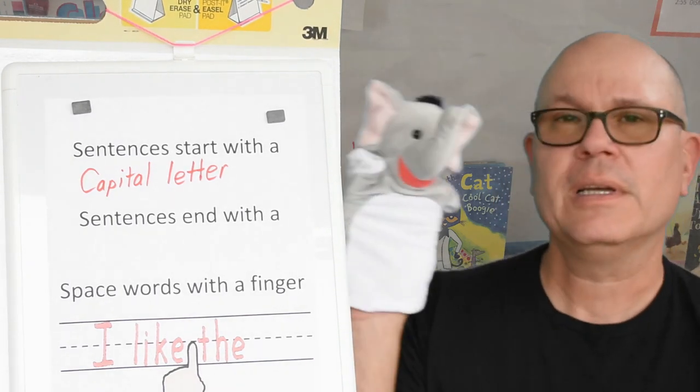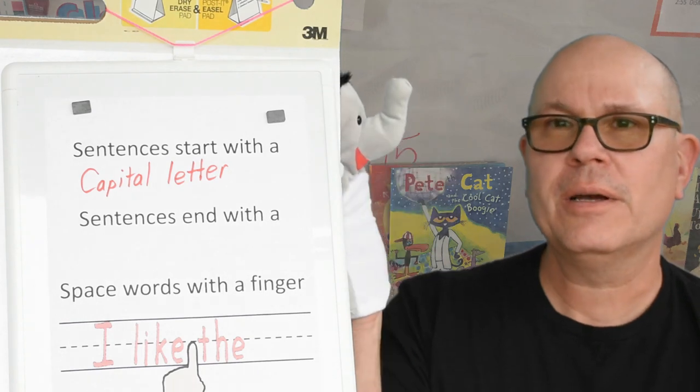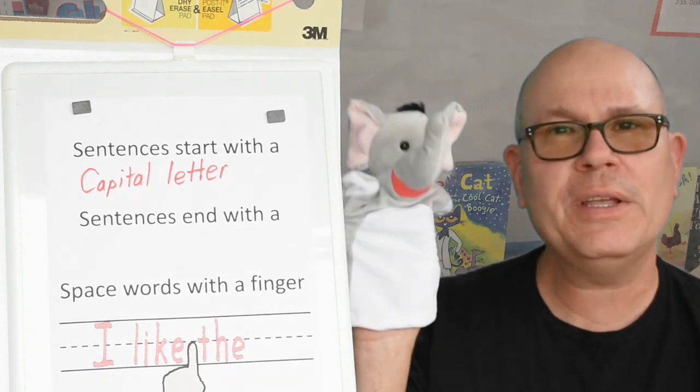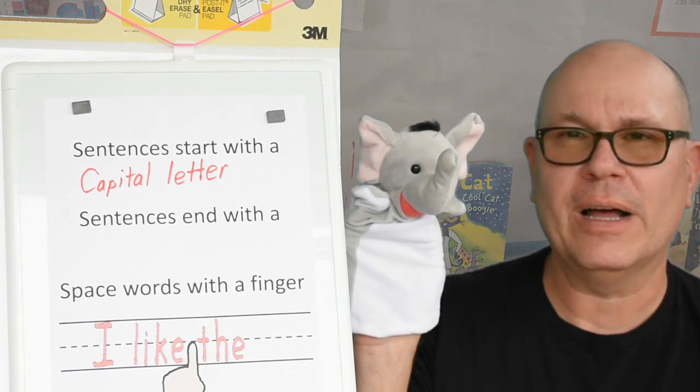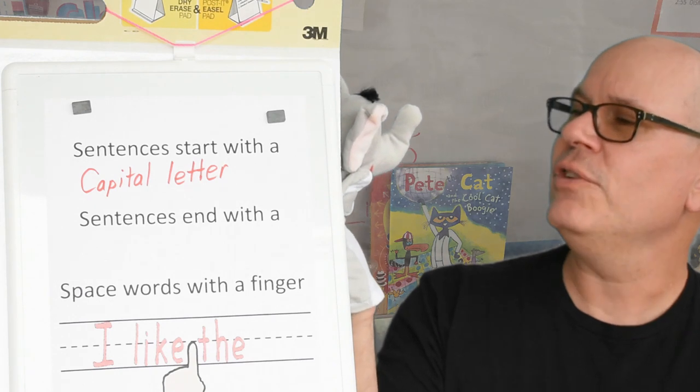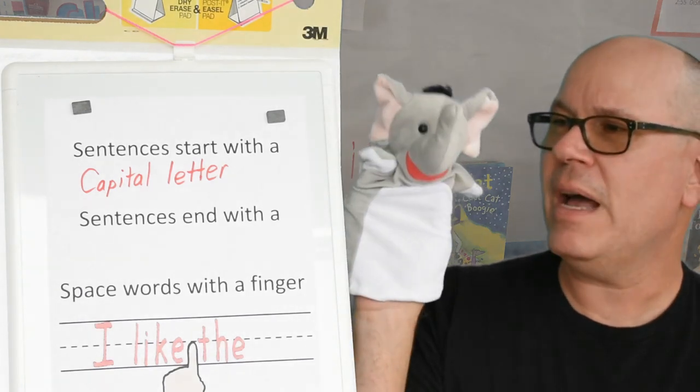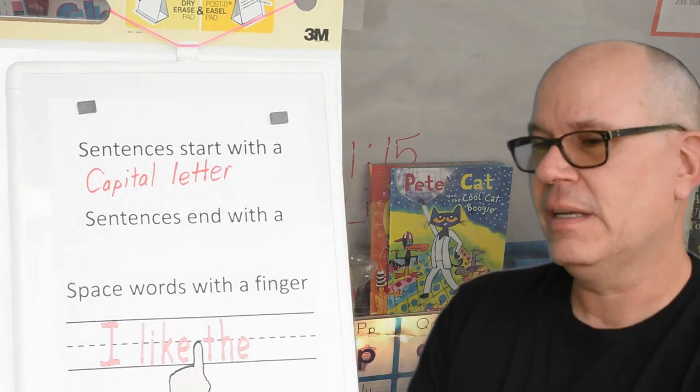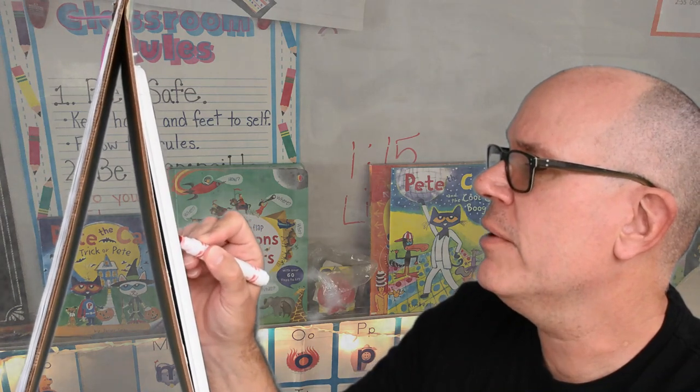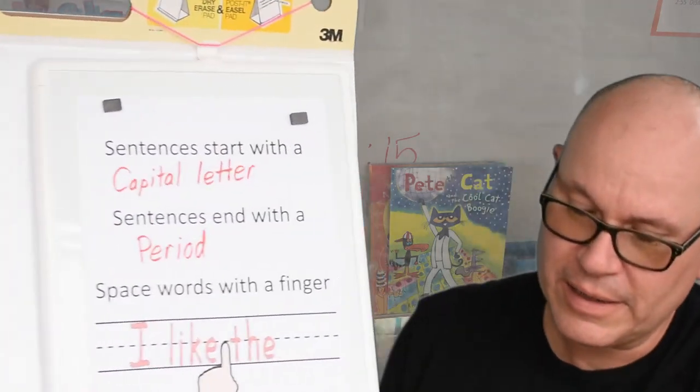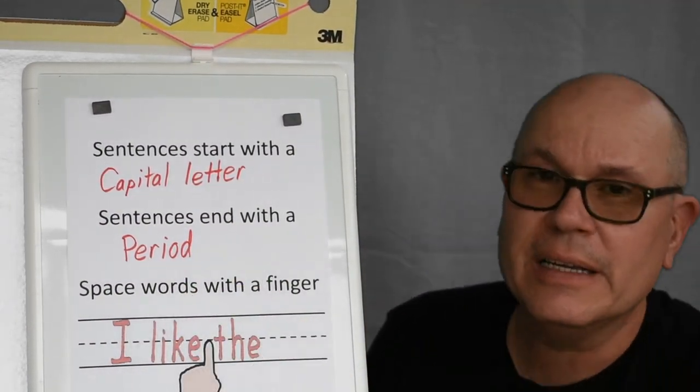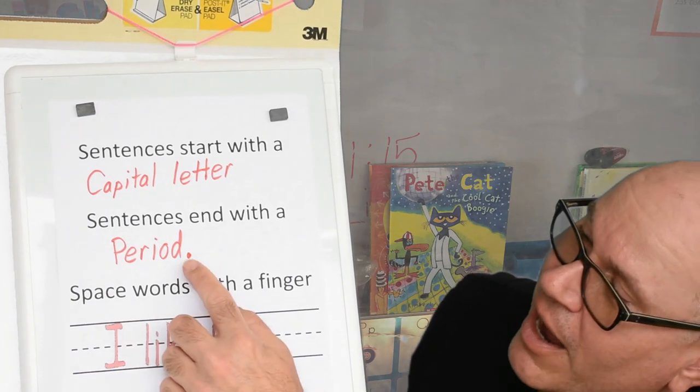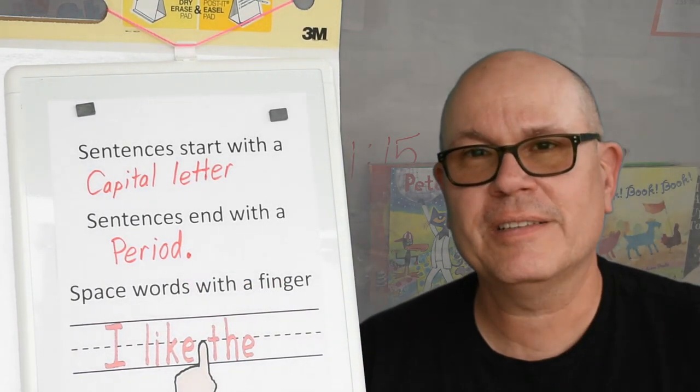So, Ella. How do we end a sentence? Oh, that's a good question, Mr. Woods. What do you think, boys and girls? How do we end a sentence? How about a period? I think she's right. What do you think, boys and girls? Let's take a look here. So, sentences end with a period. See how I wrote sentences end with a period. What does a period look like? It's a dot at the end of your sentence. That's what makes a sentence end.